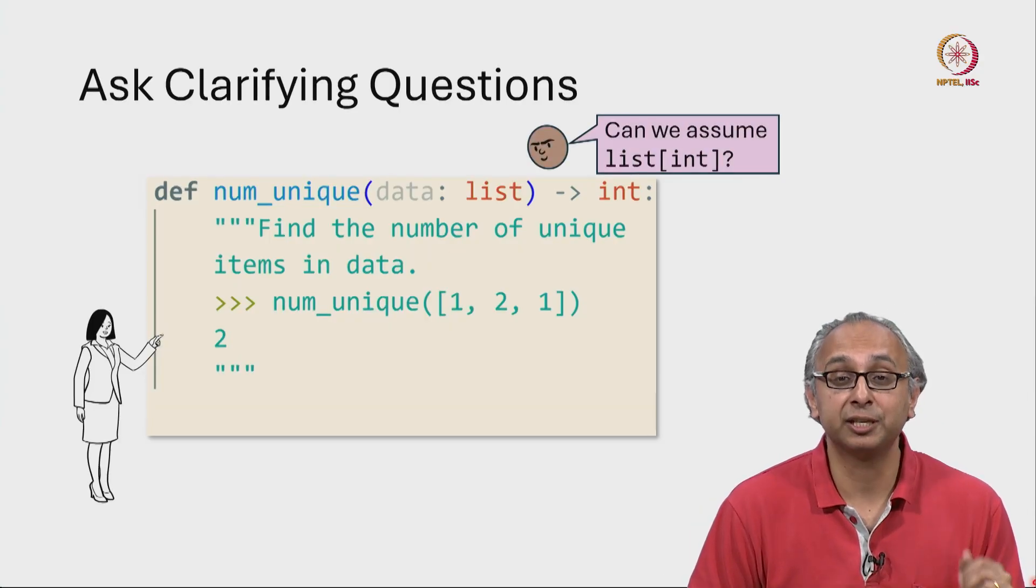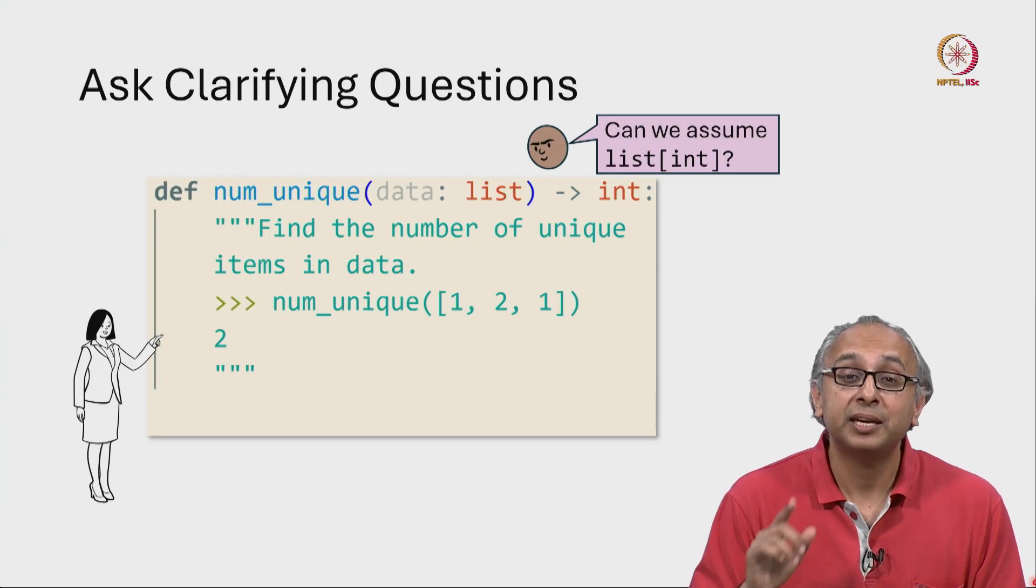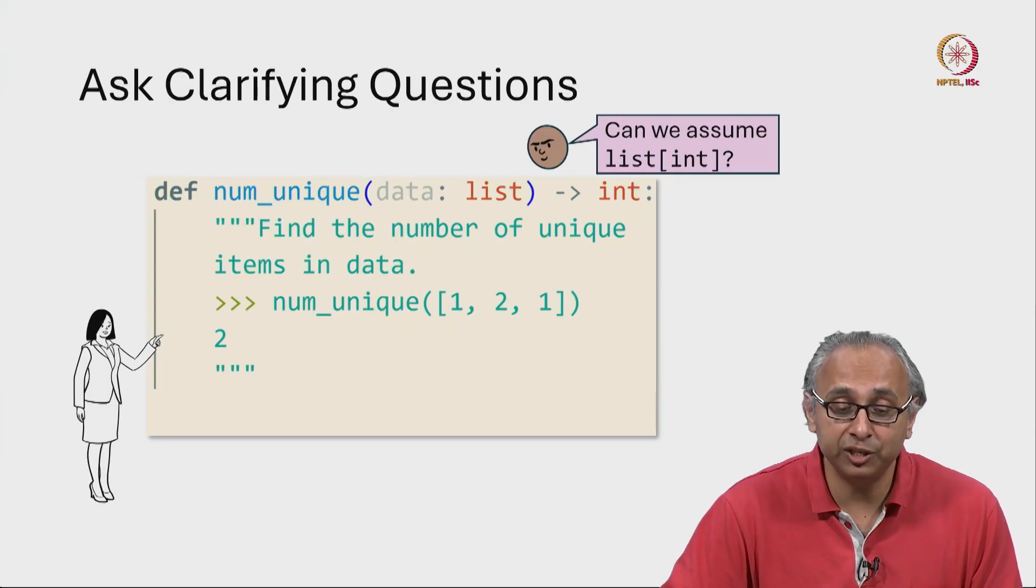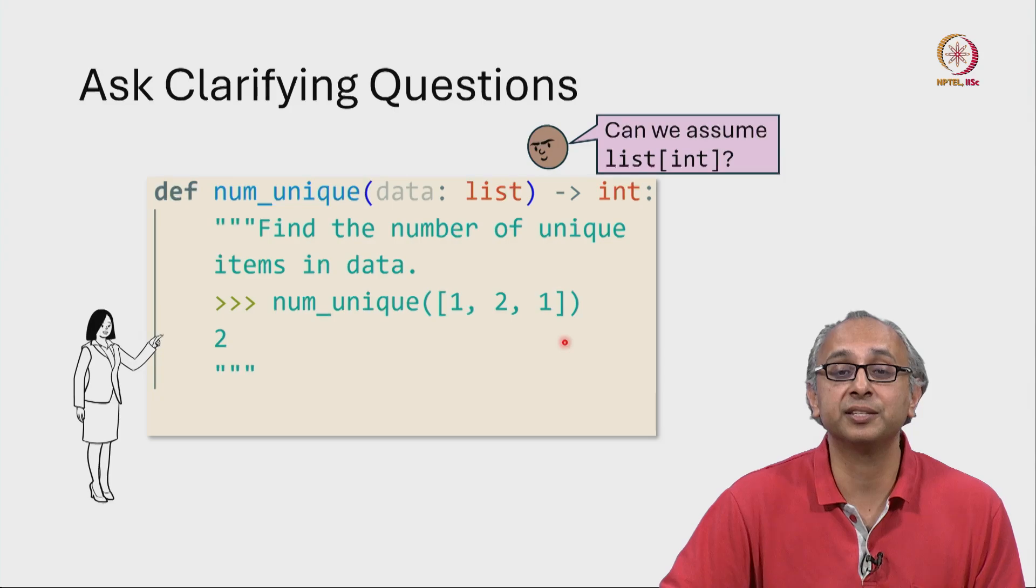Now our friend has an immediate clarifying question. Can we assume that this list is in fact a list of integers like we have in this example? Because if it is a list of integers, our friend knows that we can use a clever data structure called a set.